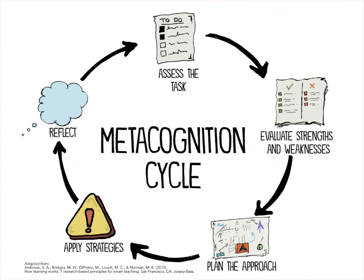Did they miss class the day that material was covered? Did they zone out in class and miss taking down some important notes? Or did they not study for the test, or not study that topic for the test? Did they misread the question and the answer choices? In reflecting on these different aspects of their performance, learners can use metacognition to identify academic weaknesses so that they know what they need to do in order to achieve better academic progress.